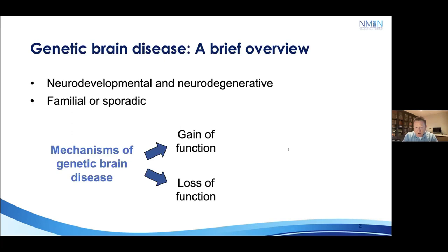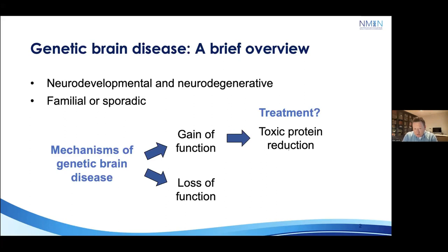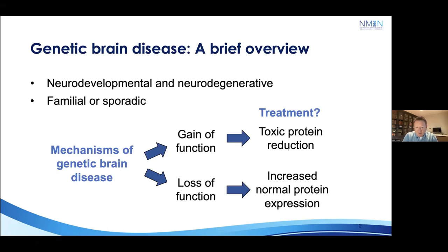Mutations can cause a gain of function — basically a novel toxic species produced by the mutation — or the mutation can cause loss of function and the loss of a normal protein. This leads to very direct approaches to therapy. For a gain of function mutation, such as in Huntington's disease, you want to eliminate or remove that toxic or misfolded protein. For loss of function mutations, we need to either repair or replace and increase the production of the normal protein.